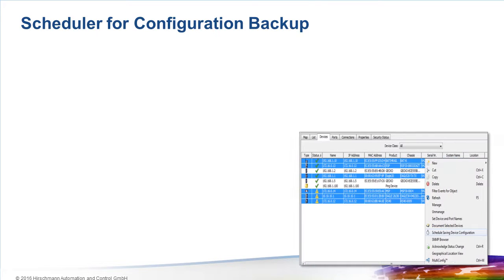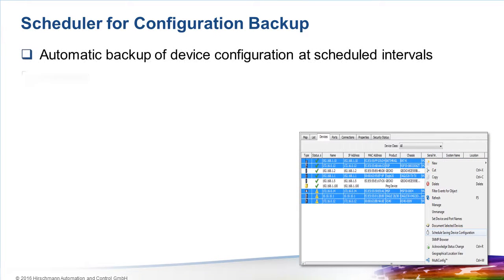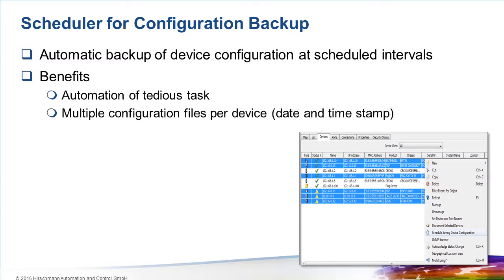The second new function is the scheduled configuration backup. Network infrastructure devices can fail, so it's important to have copies of the configuration files of all devices. A common requirement of customers with large networks is a mechanism which can automatically back up configuration files at predefined intervals — it's now possible to do exactly this. The administrator can define which devices will be backed up and how often, with an option to overwrite the previously stored backup file or to create a new file each time.